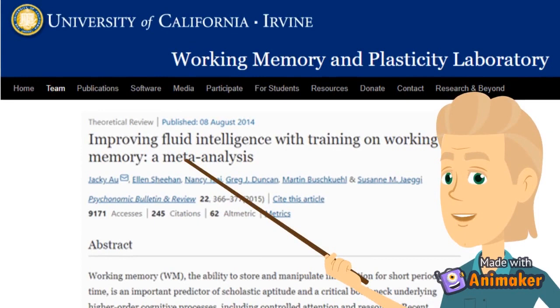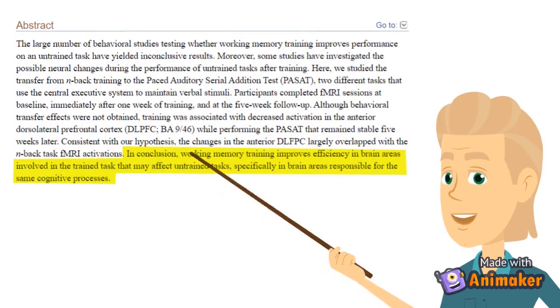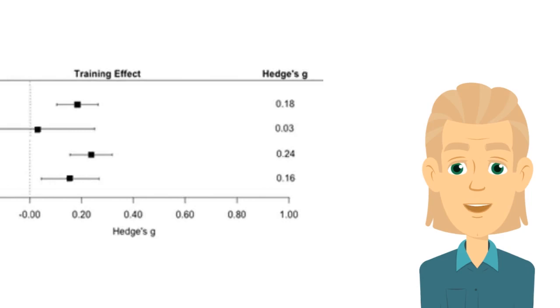Auer and colleagues at the University of California's Working Memory and Plasticity Laboratory published a meta-analysis of the effects of dual N-back training on improving fluid intelligence back in 2014. They concluded, in total, we included 20 studies in our analysis that met our criteria and found a small but significant positive effect of N-back training on improving fluid intelligence.